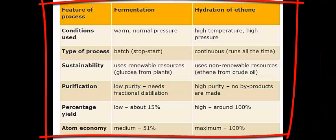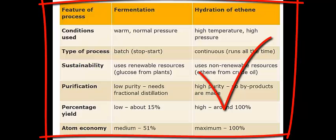On IGCSE exam papers, you will be expected to evaluate the factors relevant to the choice of production method for manufacturing ethanol. For example, a manufacturer wishes to produce large quantities of ethanol for industrial use and has access to an oil refinery within their vicinity. You would clearly choose dehydration of ethene, as they will have access to the raw material ethene, and this process provides a continuous process with high purity, which can then be turned straight into an industrial ethanol product.